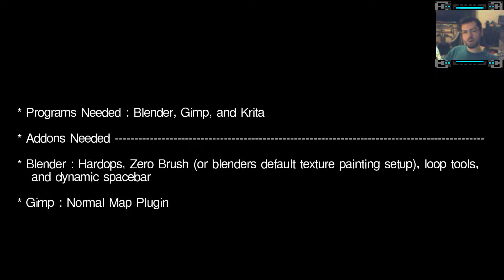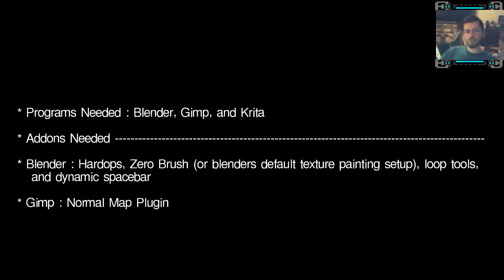A new add-on has come out called B Painter. I don't know much about it yet, so I don't know if I can recommend it — it's in the $30-$40 range. I also like using the Dynamic Space Bar. You press the space bar and it gives a nice menu — you can even search through different features that Blender has.